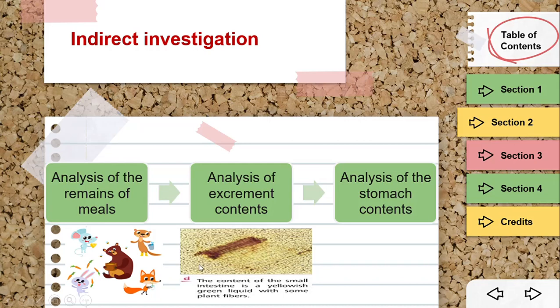For example, the content of the small intestine may be a yellowish-green liquid with some plant fibers. From this waste, the scientist will know what the animal ate — for example, that the animal ate plants.